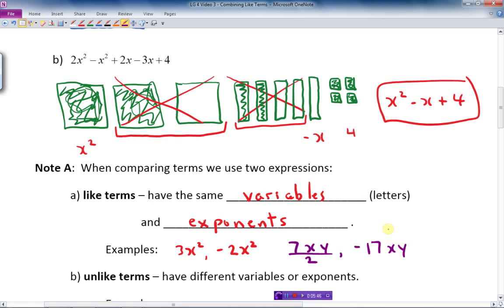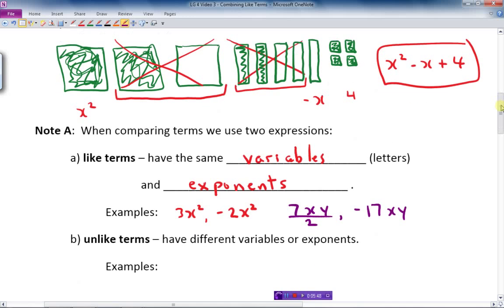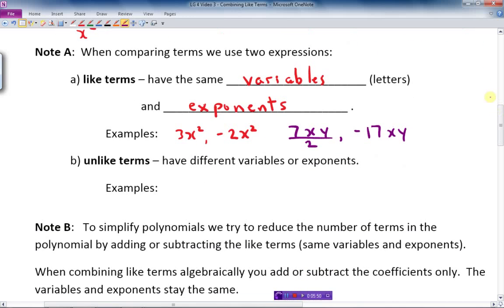Unlike terms, terms that are not like terms, have different variables or exponents. So examples of this would be things like 3y, 3x. The coefficients are the same, but that doesn't matter. They have different variables.